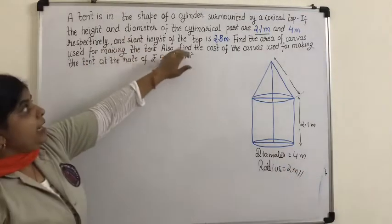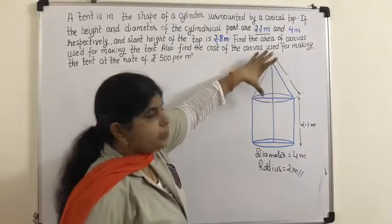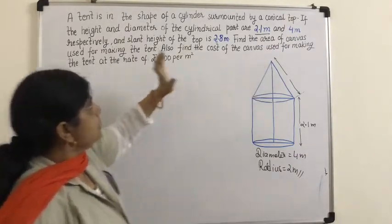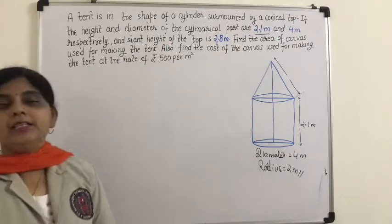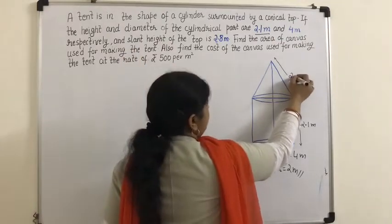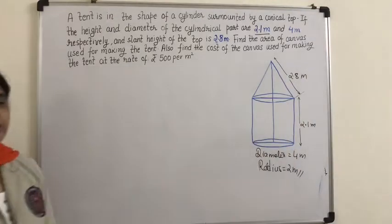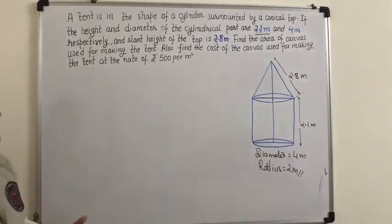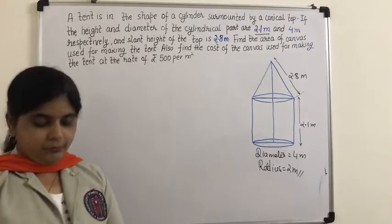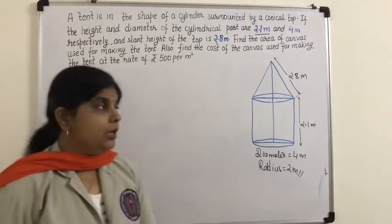The top is a cone, and for that cone the slant height is given as 2.8 meters. We need to find the area of the canvas used.